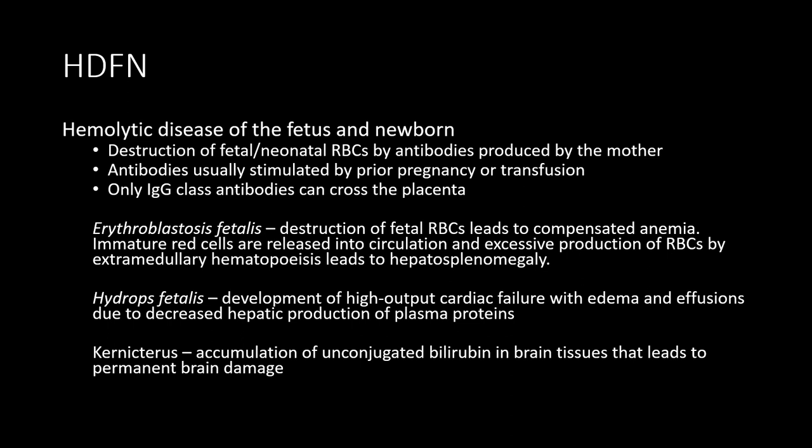The more hematopoiesis these tissues perform, the more they swell, leading predominantly to hepatosplenomegaly — enlargement of the liver and spleen, which are two sites of extramedullary hematopoiesis — and that leads to hypertension and damage to liver cells. We also see release of immature red blood cells into circulation, called erythroblastosis fetalis. Severe anemia can lead to cardiac failure and generalized edema or effusions, known as hydrops fetalis. When the liver is overwhelmed by hematopoiesis, it does not produce enough plasma proteins to retain osmotic pressure.